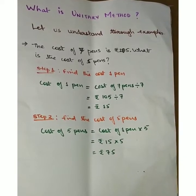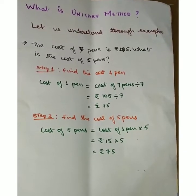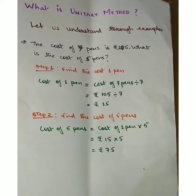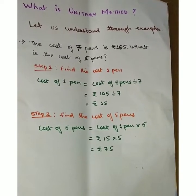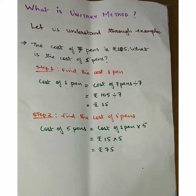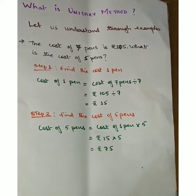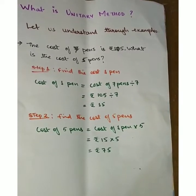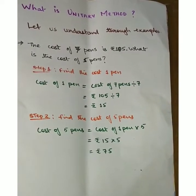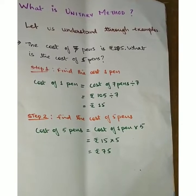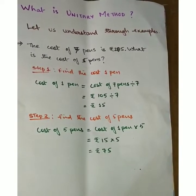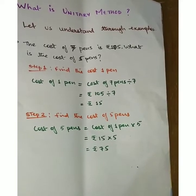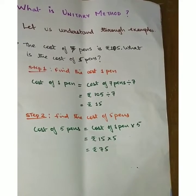In step two, find the cost of five pins. The cost of five pins equals the cost of one pin multiplied by five. We get rupees 75.